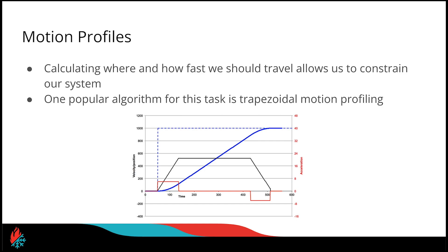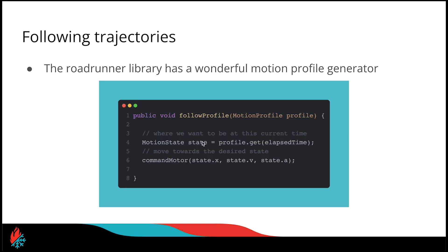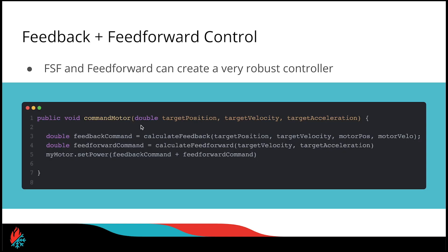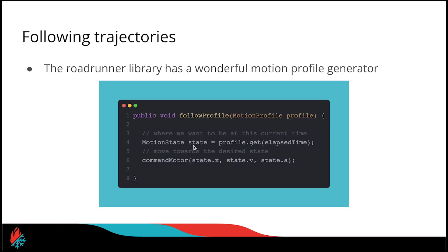Motion profiles calculate where and how fast we should travel, and this allows us to constrain our system. The most popular algorithm for FTC at least is a technique known as trapezoidal motion profiling. The reason for that is our velocity curve here is in the shape of a trapezoid. Our motion profile will give us a target position or target velocity and target acceleration at the current point in time. That's just like any point in time along this graph. We will feed that into the target position, target velocity, and target acceleration of this command loader method here.